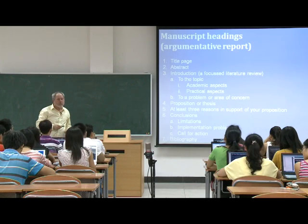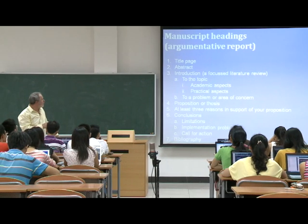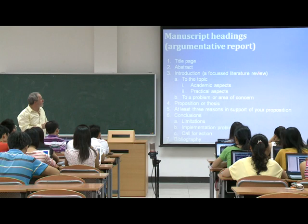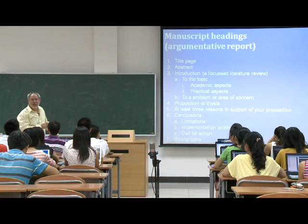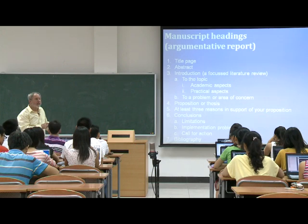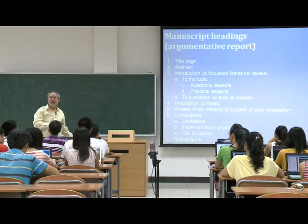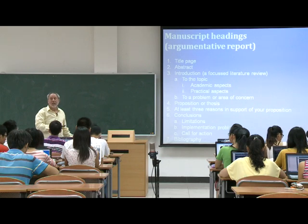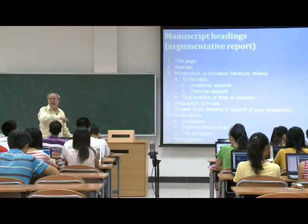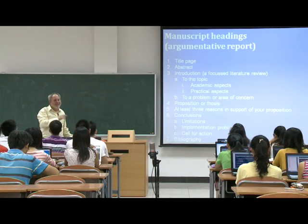An argumentative paper takes the form 'someone ought to something' — that's what you're arguing. The manuscript headings for an argumentative paper are a little different from a scientific paper but share some similarity. You have a title page and an abstract. The introduction is a focused literature review, but here your literature review may well include government and industry sources, which raises the challenge of referencing them correctly. This raises a real question of what's a legitimate reference — you can find a blog where somebody said something, but whether that's a reference you can actually use depends on who the someone is.